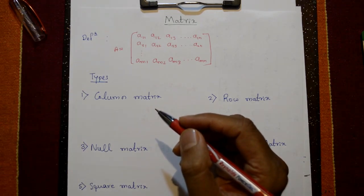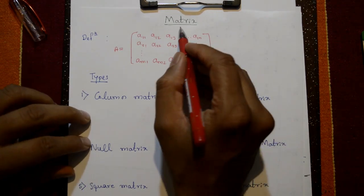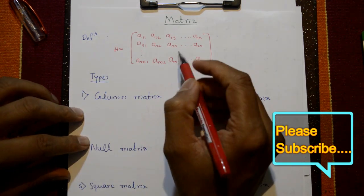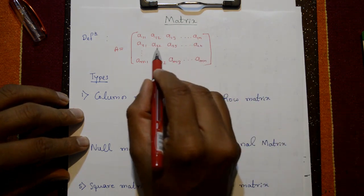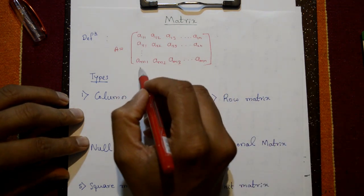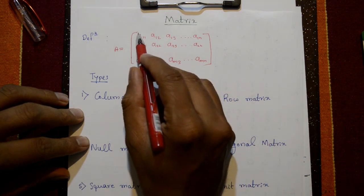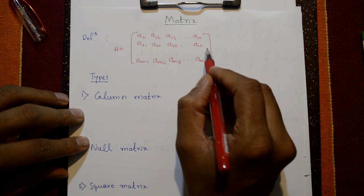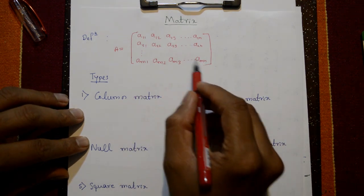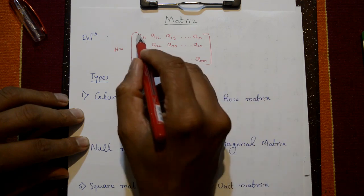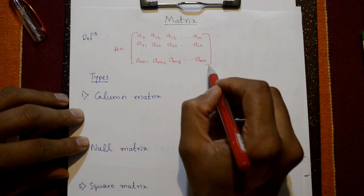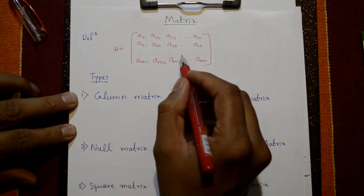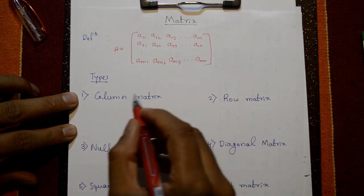Welcome viewers. First, let's understand what a matrix is. The number of rows and number of columns arranged in a rectangular array or bracket is called a matrix.